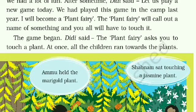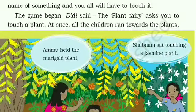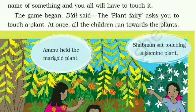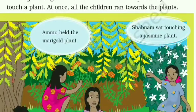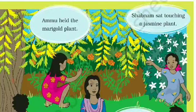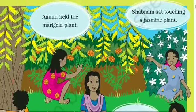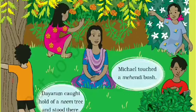Didi said, 'The plant fairy asks you to touch a plant.' Plant fairy kahti hai ki kisi ek plant ko touch karo. At once, all the children run towards the plants. Sabhi bachche podho ki taraf doodh pardate hain. Bush — B-U-S-H means jhaadiya, mehendi ki jhaadiya.